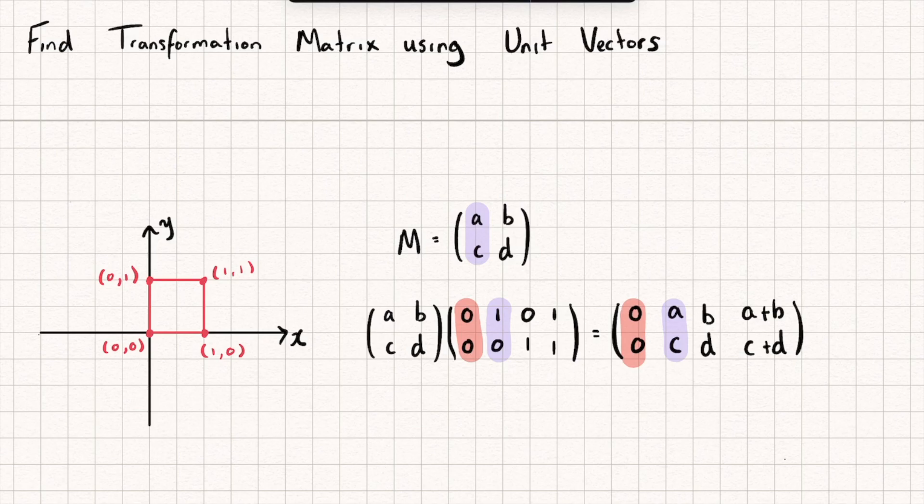Okay, let's now look at my point (0,1) which is my j unit vector. Well under the transformation matrix M it becomes the point (b,d) which happens to be my second column of my transformation matrix.